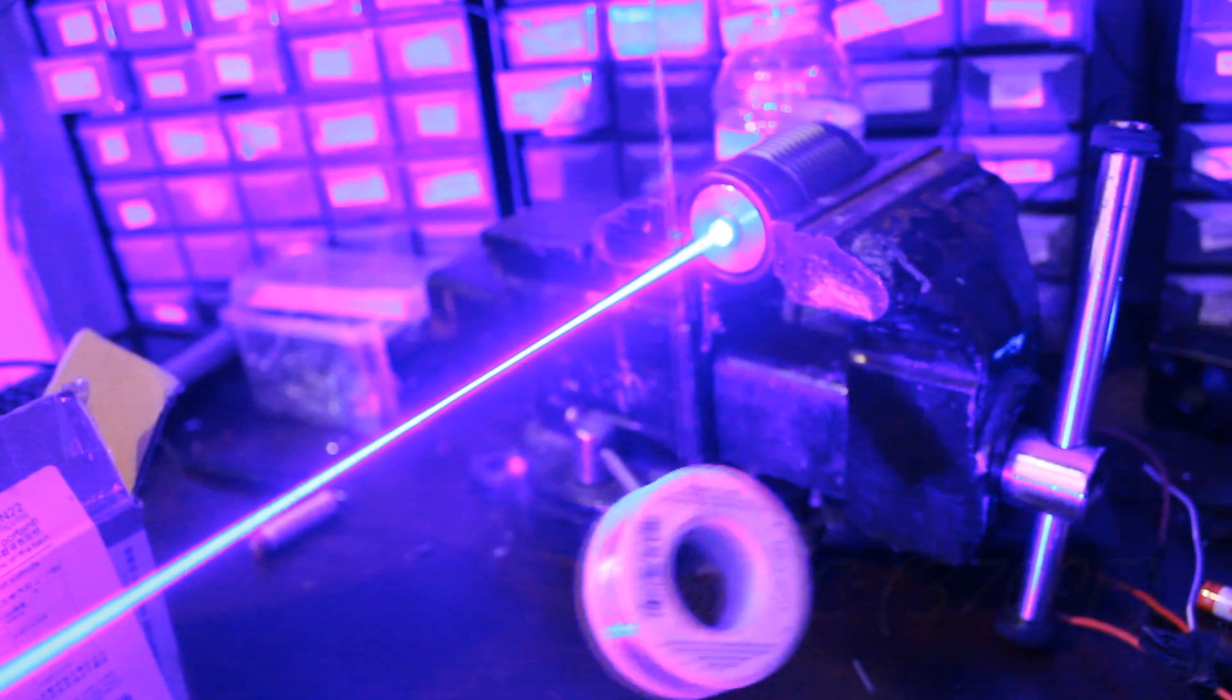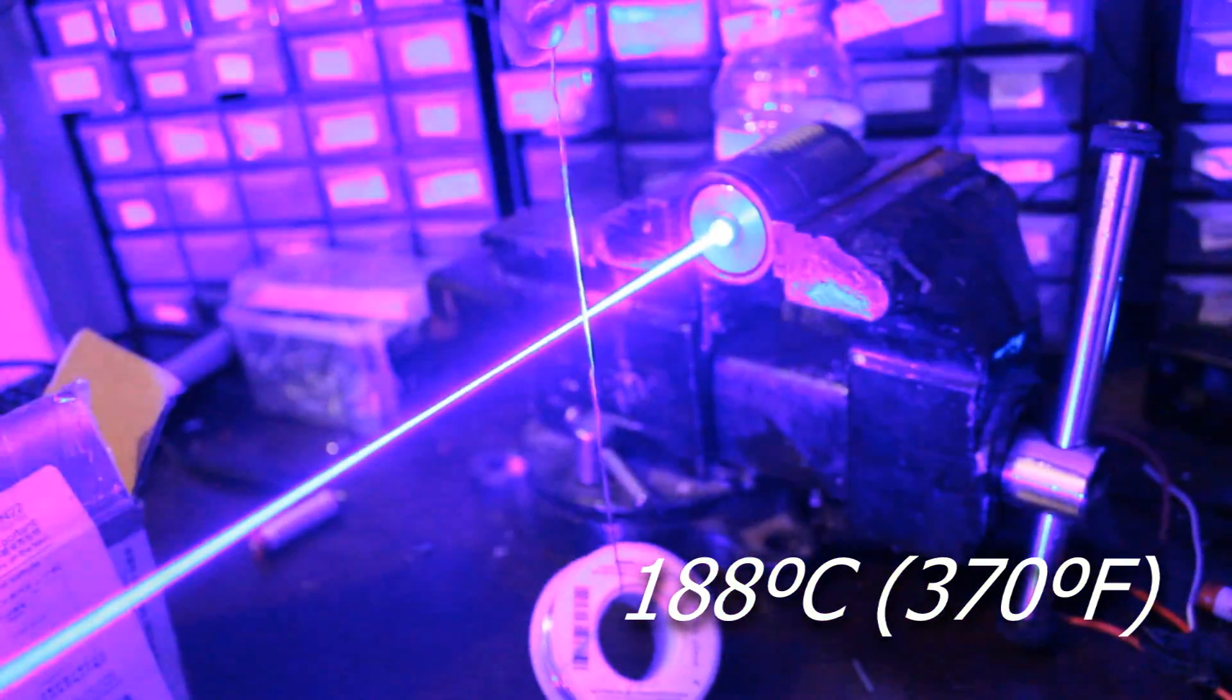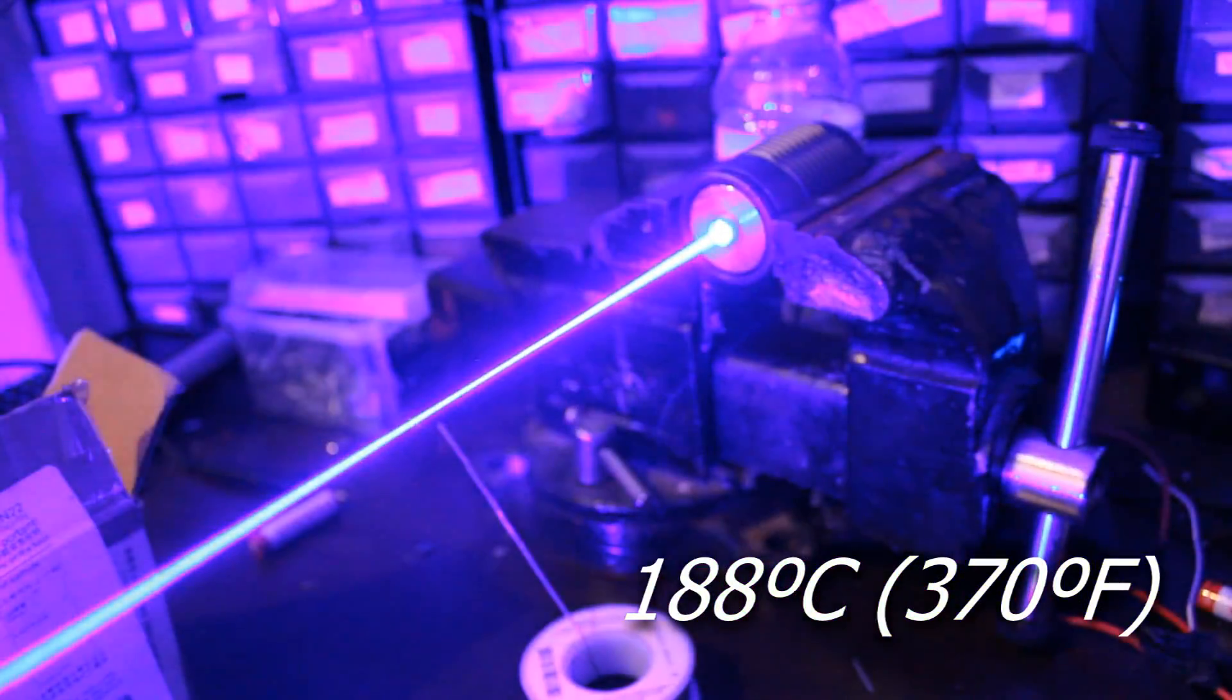Now with all that being said, we can get some ballpark estimates on the max temperature of the spot of the laser simply by sticking stuff in the beam, seeing what burns and melts, and then comparing it with the known values for those materials. This solder melts at 188C. So we know it can at least get that hot.